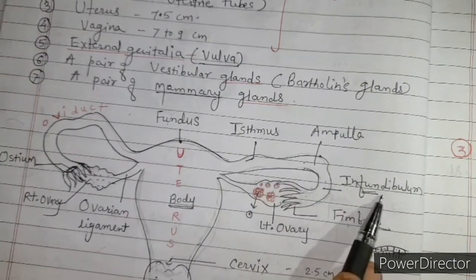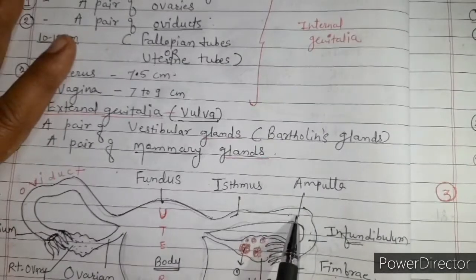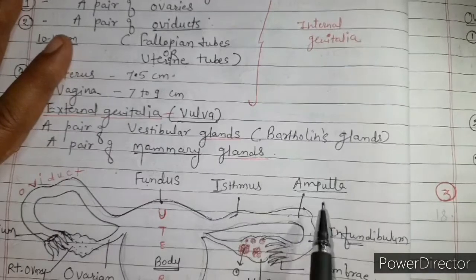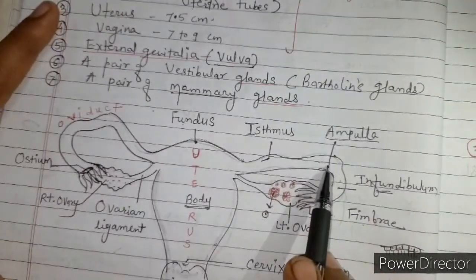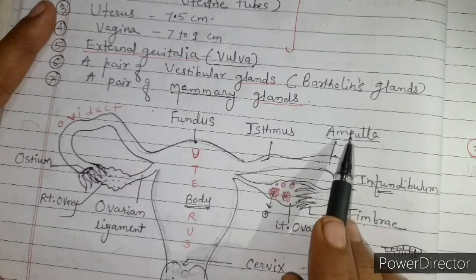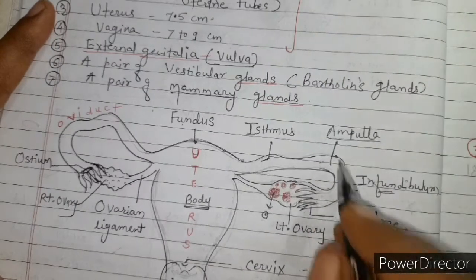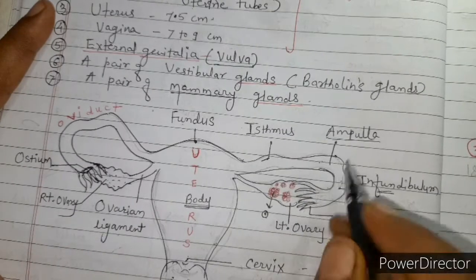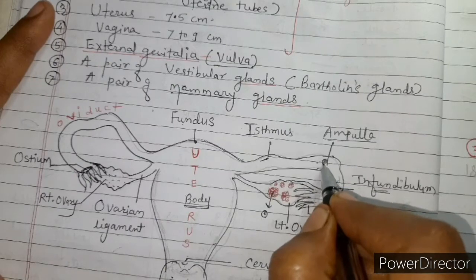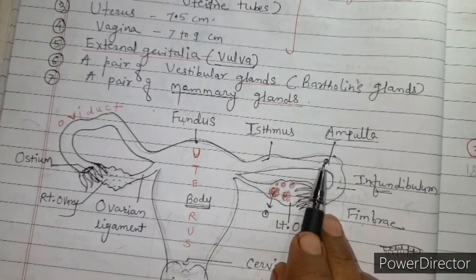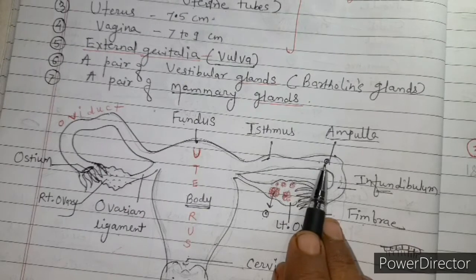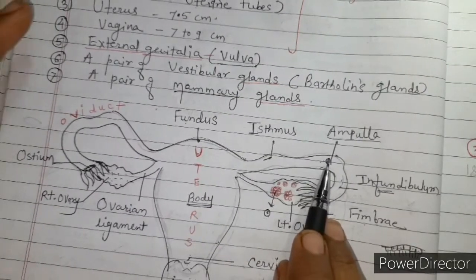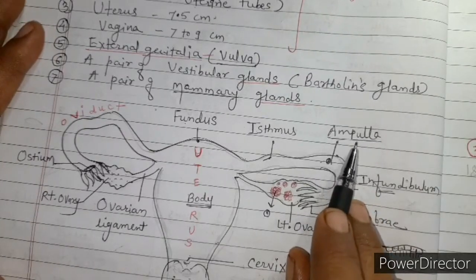This is the first part of the oviduct. The middle part, which is somewhat straight, is called the ampulla. The ampulla is the site of fertilization — when the egg arrives here, the egg nucleus fuses with the sperm nucleus and a zygote is formed.